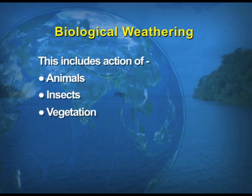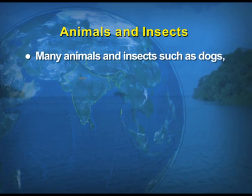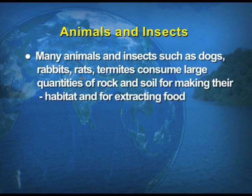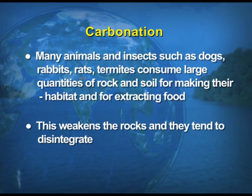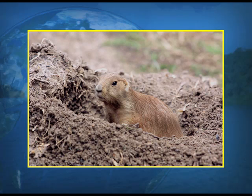Now we take up the third type of weathering, known as biological weathering. This includes the action of animals, insects, vegetation, and man. First, the action of animals and insects: many animals and insects such as dogs, rabbits, rats, and termites consume large quantities of rock and soil for making their habitat and extracting food. When they burrow, they dig out the rock, which weakens and tends to disintegrate. This visual shows how animals make burrows and help in the disintegration of rocks.